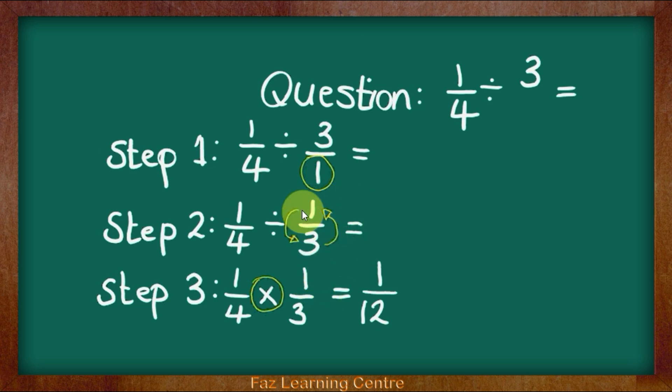I have drawn some arrows to show you that we have flipped the whole number. The 1 has moved from the denominator and the 3 has moved up to the numerator. So we have literally flipped them over.